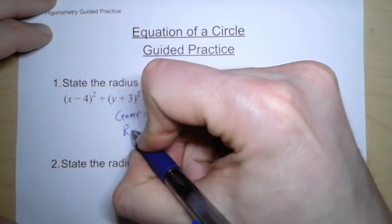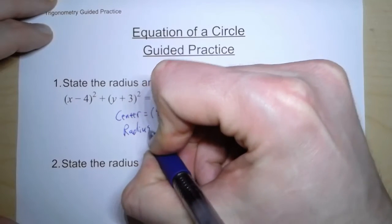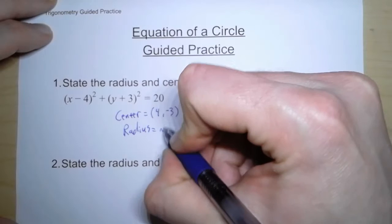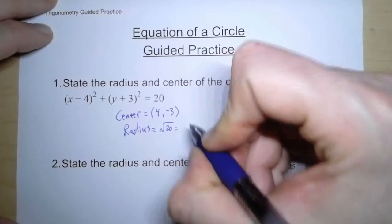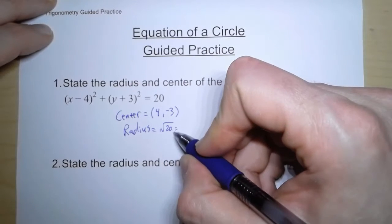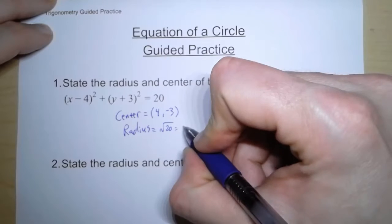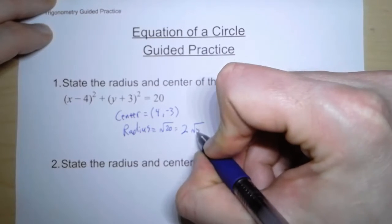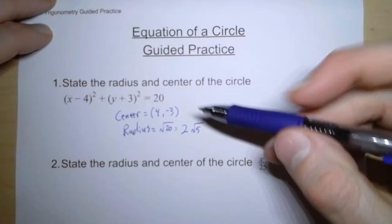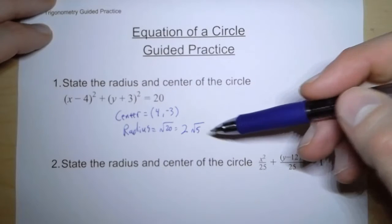And the radius is actually the square root of this number, square root of 20. Now we can't take the square root of 20, but we can take the square root of 4. So we can simplify this to 2 square root of 5. And so that's our center, and that's our radius.